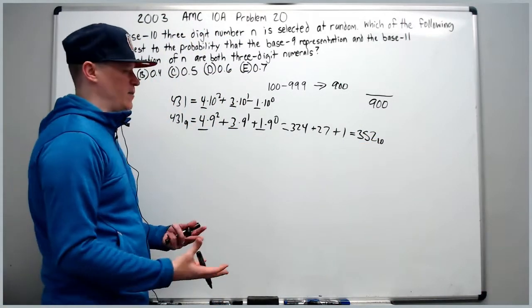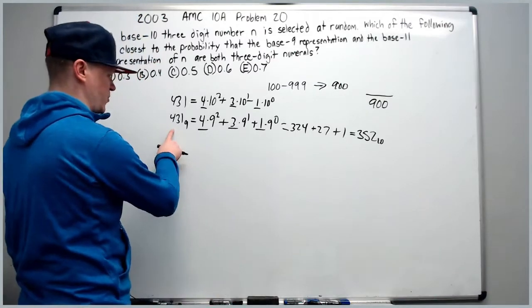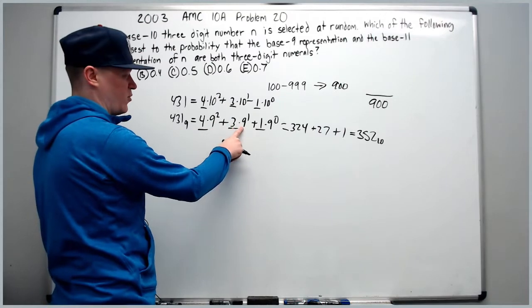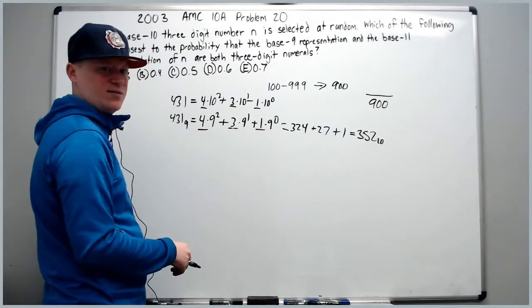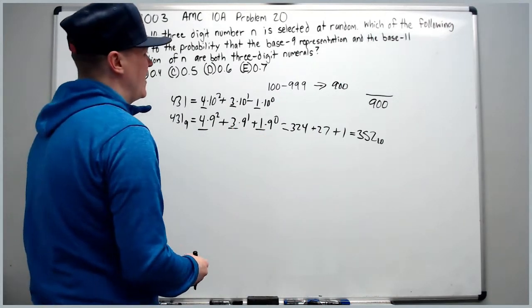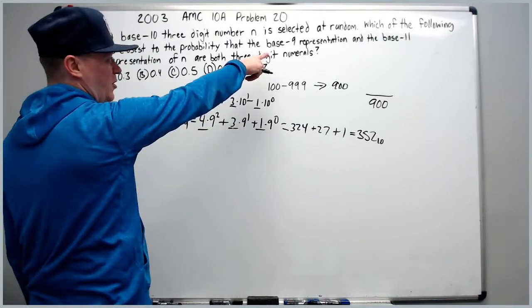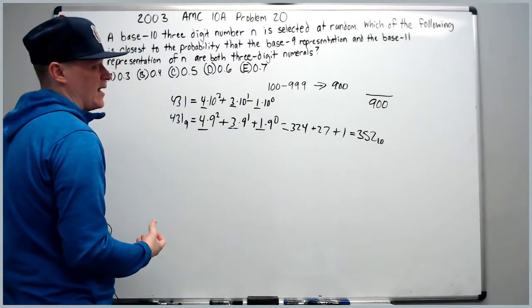So now that we understand that, base 11 works the same way. If this was 431 base 11, it would be 4 times 11 squared plus 4 times 11 plus 1 times 11 to the 0 and so on. Now we need to find how many base 10 numbers are both 3 digits in base 9 and base 11.